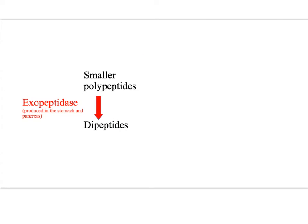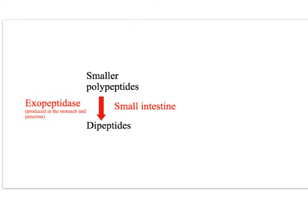The smaller polypeptides, which have left the stomach, are now digested into dipeptides by exopeptidase enzymes. Exopeptidase enzymes are produced primarily by the pancreas. They hydrolyse the peptide bonds, breaking off dipeptides, and this occurs in the small intestine.